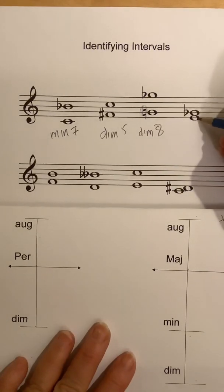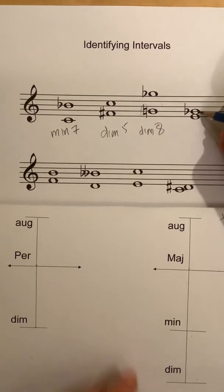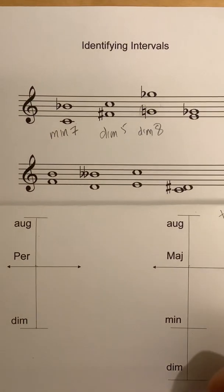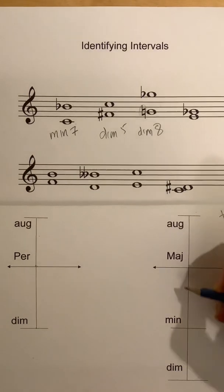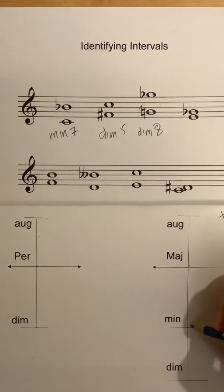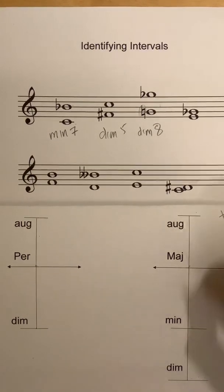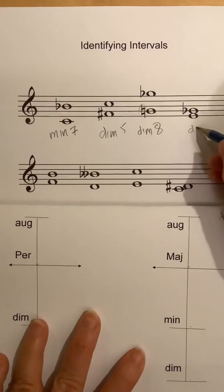Here's an E to a G-flat. E major has what kind of G? That's a third, and E major has a G-sharp. So G-natural would be minor, and G-flat is another diminished — diminished third, dim three.